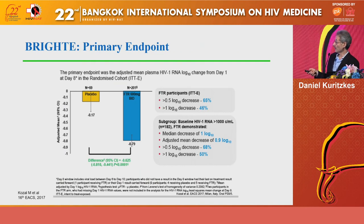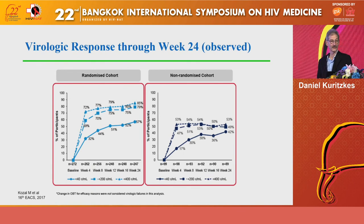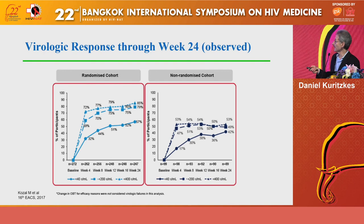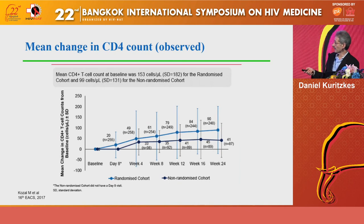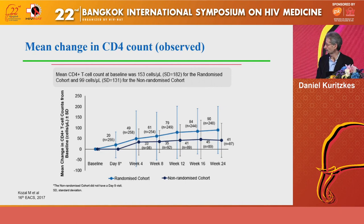This was a very highly treatment-experienced group — even 70% in the non-randomized cohort had already tried enfuvirtide. Nearly 80% of the non-randomized cohort had no other drugs available, whereas about half of the randomized group had one or two drugs to add. The primary endpoint showed a 0.8 log reduction at day eight compared to 0.17 log in the placebo group — statistically significant. About 57% in the randomized cohort achieved less than 50 copies, roughly 80% less than 200 copies, while in the compassionate use group only about 40% achieved full suppression.